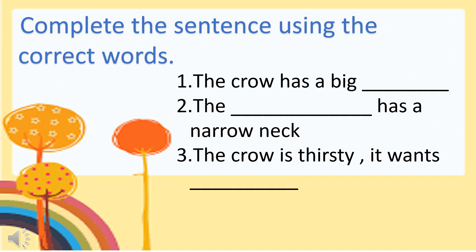Now that we have learned some words that are used in the story, it's time to complete the sentence using the correct words. The clue to the answer is the words are used inside the story. Let us read number one: the crow has a big blank. Sentence number two: the blank has a narrow neck. Question number three: the crow is thirsty. It wants blank. What do you think those words are? Kindly write your answers in your paper. You can take a picture and send it to me.